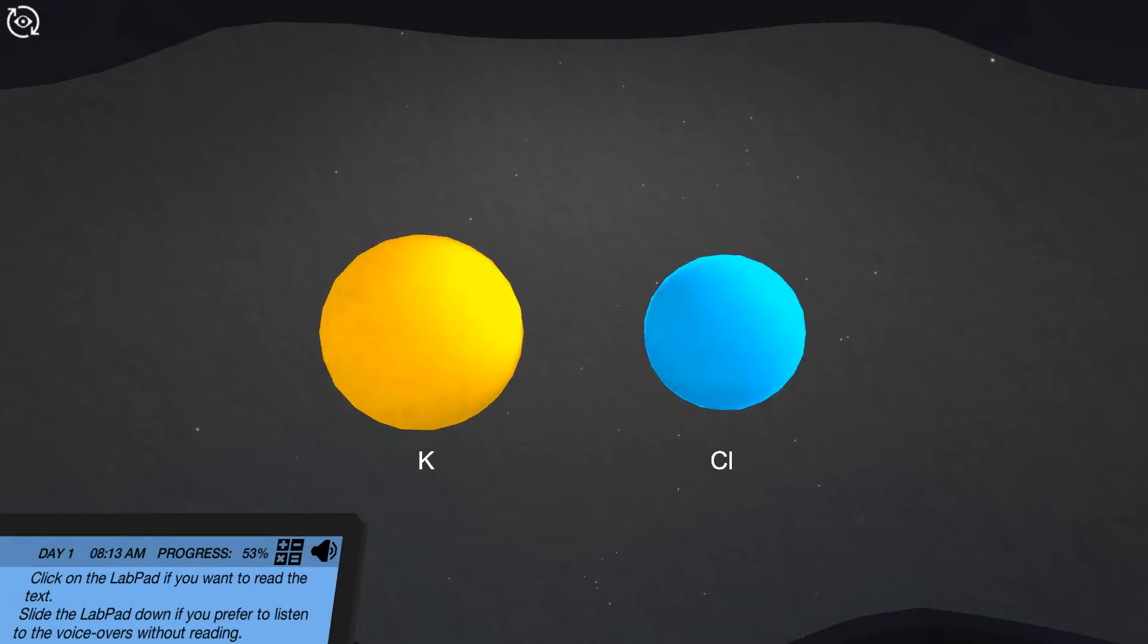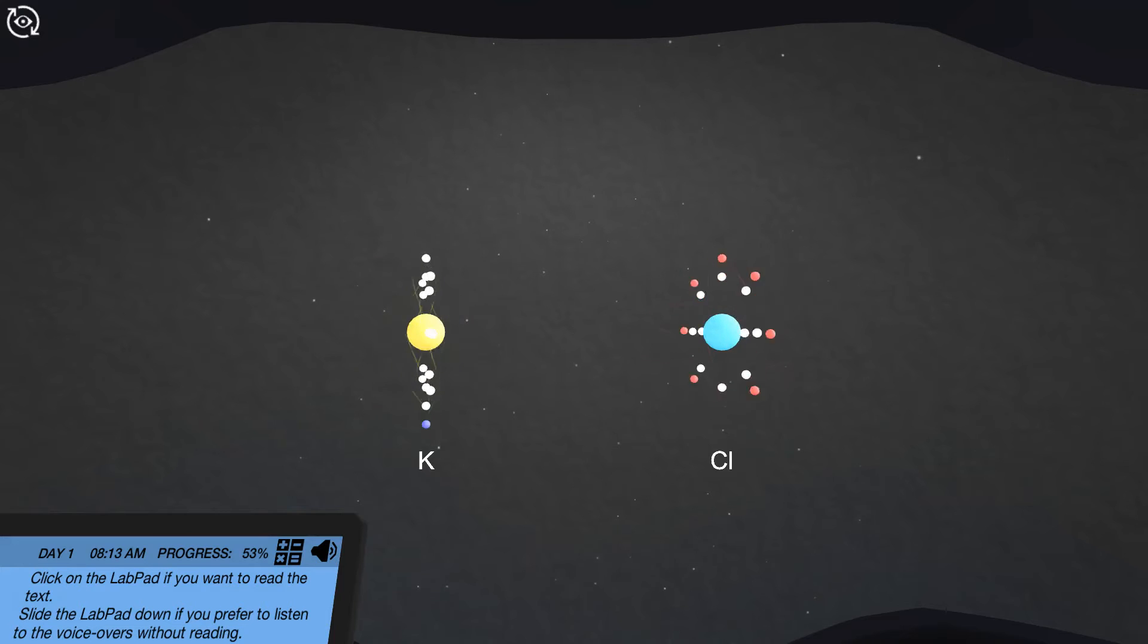This is a single potassium atom and a single chlorine atom. Potassium has 19 electrons, with 1 electron in the valence shell. In order to reach the same number of electrons as the noble gas argon, potassium has to give up 1 electron.